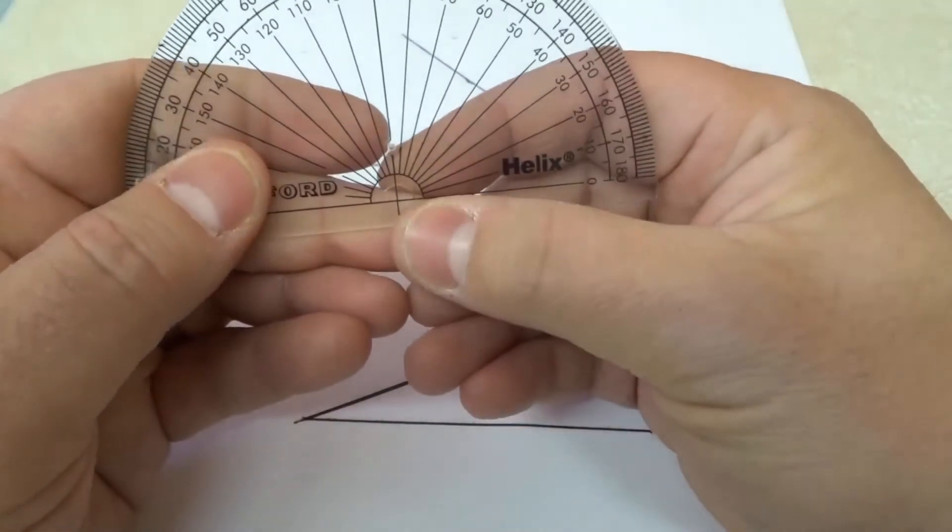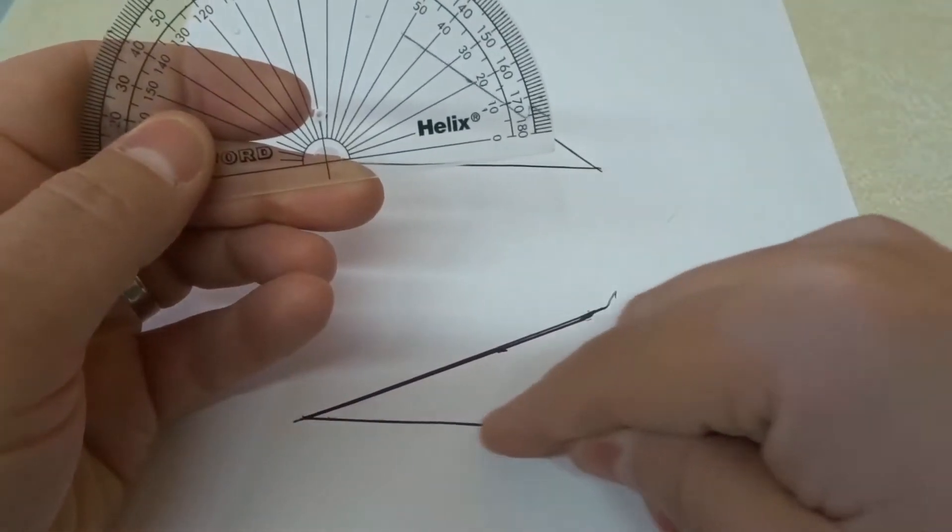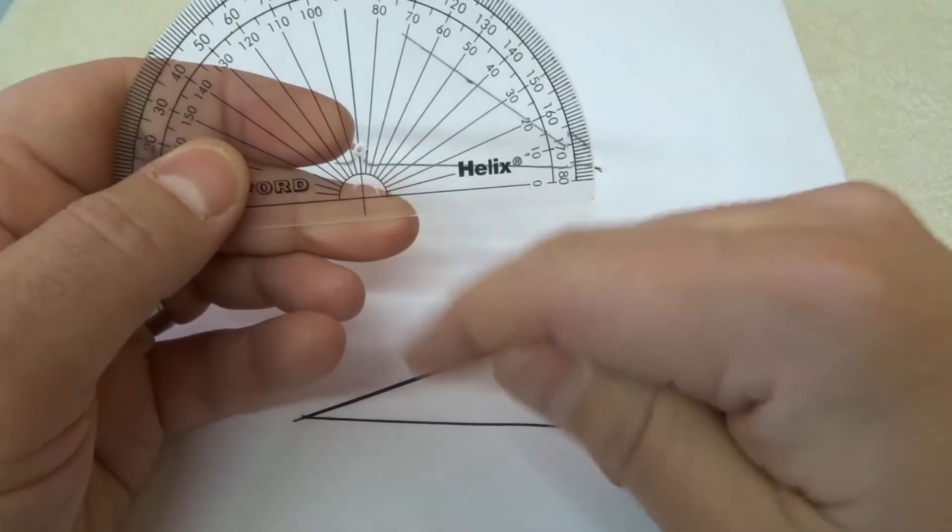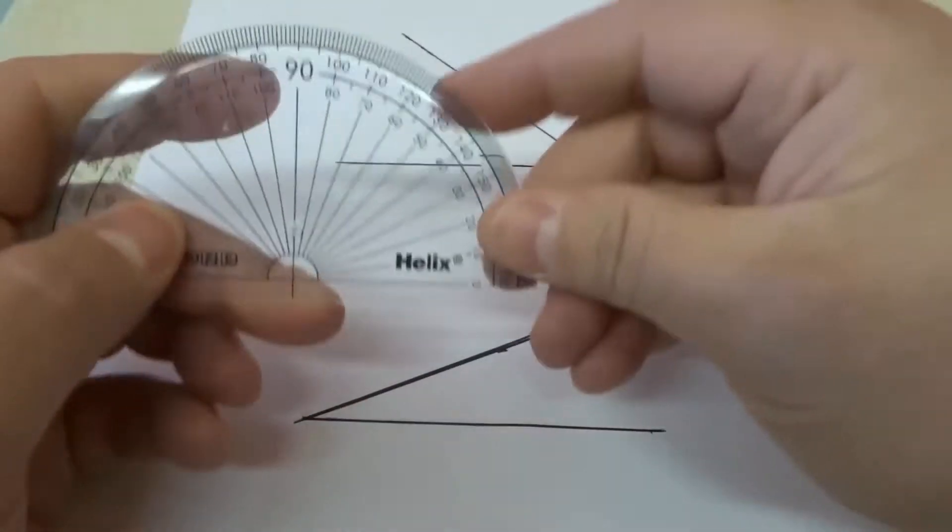So basically what we're going to do is we're going to line up this bottom line with the bottom line on the angle. And then this little vertical line right in the center is going to go right at the corner of the angle.